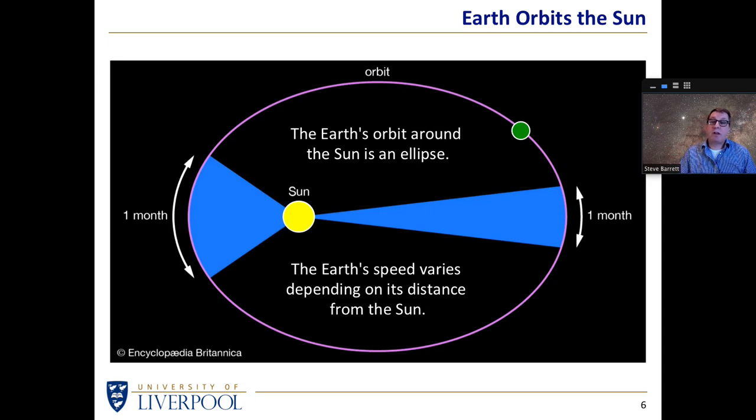In this particular diagram, the blue areas, the area swept out by the Earth's motion during one month, is quite different when it's at its furthest from the Sun, and when it's at its closest to the Sun. The blue areas are the same, but the speed that the Earth needs to move differs.